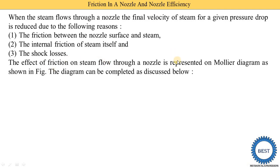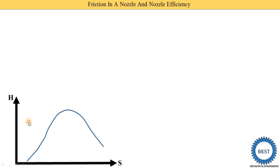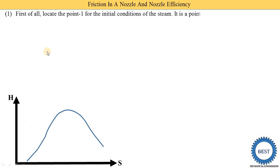The effect of friction on steam flow through a nozzle is represented on the Mollier diagram. This is the h-s diagram where h (enthalpy) is on the y-axis and s (entropy) is on the x-axis. The h-s diagram is also called the Mollier diagram. In this diagram there is a saturation curve and also constant pressure lines and constant temperature lines.